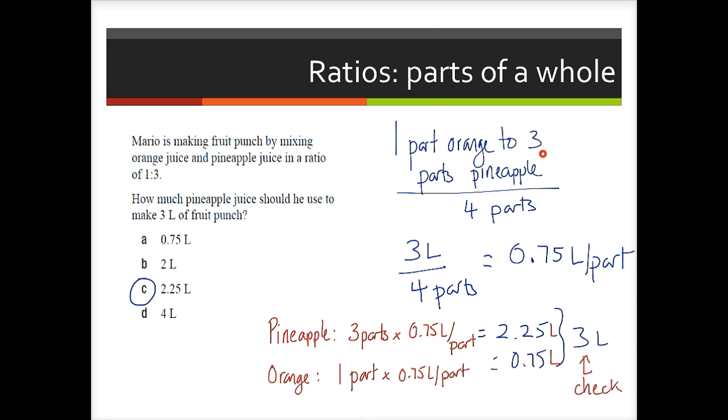So this was Emily's idea, was to use parts. So if there's 3 parts pineapple juice and 1 part orange juice, then there's in total 4 parts. So if we divide our 3 liters into those 4 parts, we get 0.75 liters per part. And then the pineapple juice will be 3 parts at 0.75 liters per part, which is 2.25 liters. And the orange juice is 0.75 liters. This is simply a check here. If we add up the amount of pineapple and orange juice, do we get to 3 liters, which was the total amount of fruit punch, and we do.